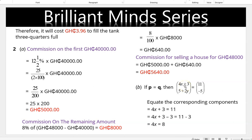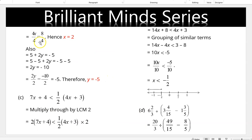This is a vector equation. Equate the corresponding components: 4x + 3 = 11. Applying the balance method, 4x = 8, so x = 2. Also, 5 + 2y = −5. Transposing 5 to the right-hand side: 2y = −10, therefore y = −5.